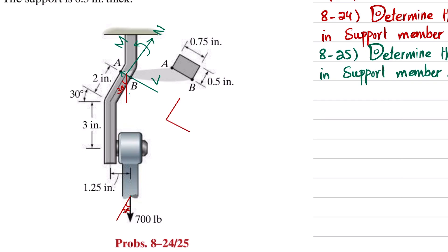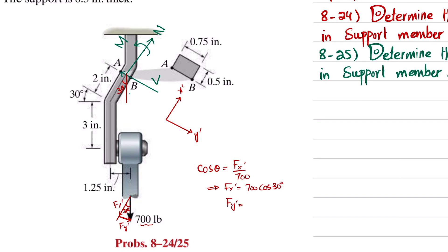We establish a new coordinate system: x-dash along the normal direction and y-dash along the shear direction. The 700-pound force has two components — one along x-dash and one along y-dash. Using trigonometry: Fx-dash equals 700 times cosine of 30 degrees, and Fy-dash equals 700 times sine of 30 degrees.